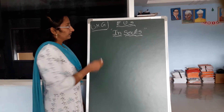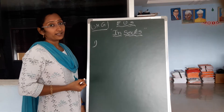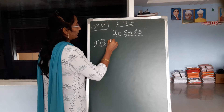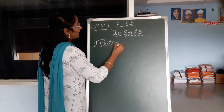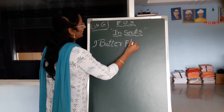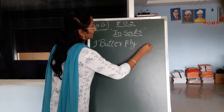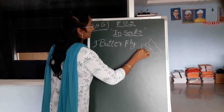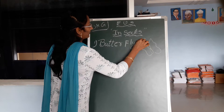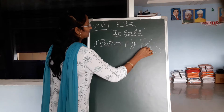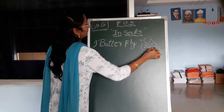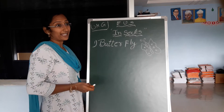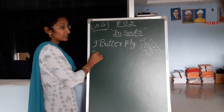Insects. The first one is butterfly. Butterfly. Like this, children — butterfly. What is this? It is called butterfly. Do you like that, children? I also like butterflies so much.